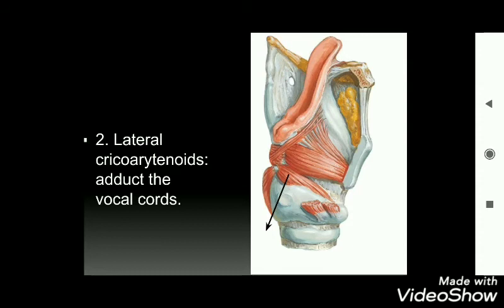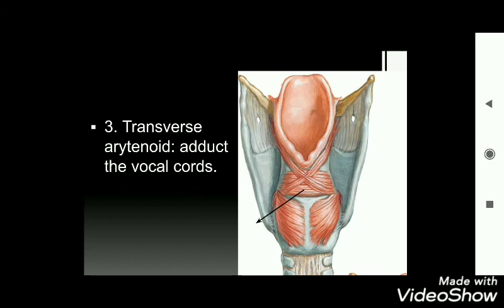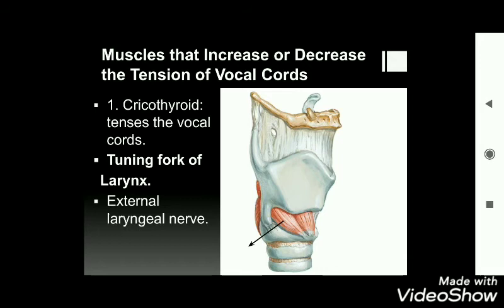The lateral cricoarytenoid muscles adduct the vocal cords and act more forcefully if the posterior cricoarytenoid muscles are paralyzed. The transverse arytenoid muscle is also responsible for adduction of the vocal cords.